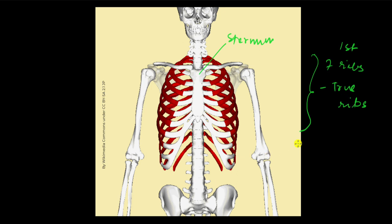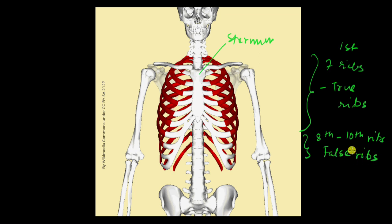The next three ribs — the eighth, ninth, and tenth — are not directly connected to the sternum. Instead, they connect to their own cartilage, which joins and then connects to the cartilage of the seventh rib, which finally connects to the sternum. So these three ribs are called false ribs — that doesn't mean they don't carry out their function, it's just a nomenclature. The last two ribs, the eleventh and twelfth, don't have any cartilage at all and are not connected to the sternum — they are called floating ribs.